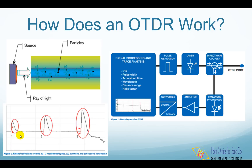When the light hits an abrupt change in refractive index — for example, from glass to air at a fiber connector interface — a higher amount of light is reflected back, which can be thousands of times bigger than the Rayleigh backscattering.